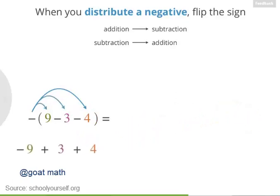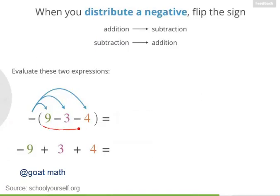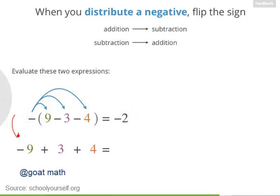Does that really work? Go ahead and make sure these two expressions are equivalent. 9 minus 3 minus 4 gives you 2, and then you're making it negative, so you have negative 2. And down here, negative 9 plus 3 plus 4 also gives you negative 2.